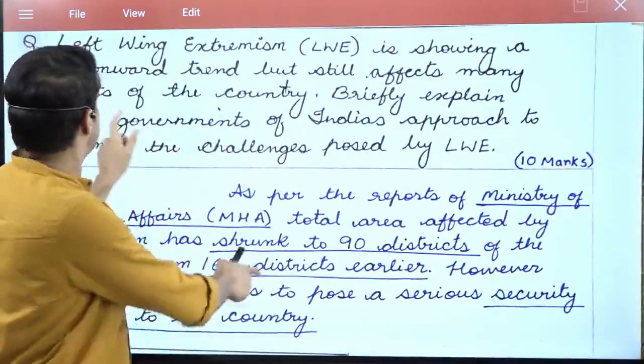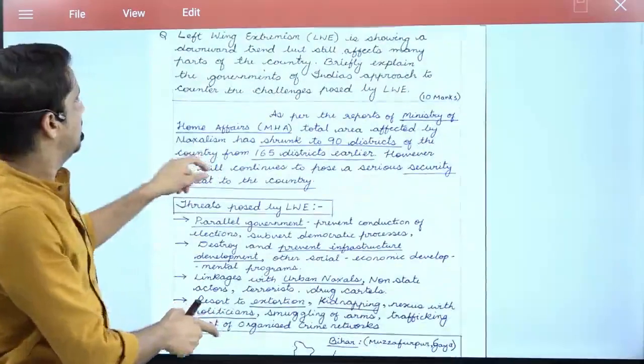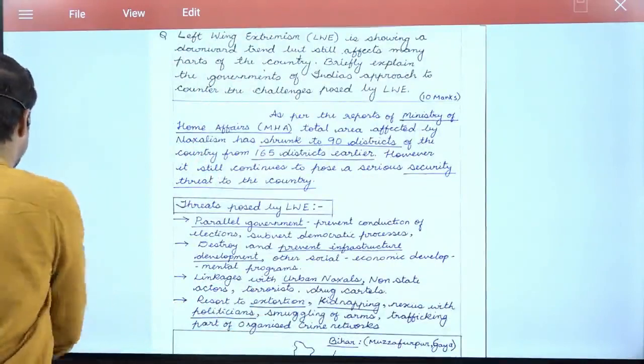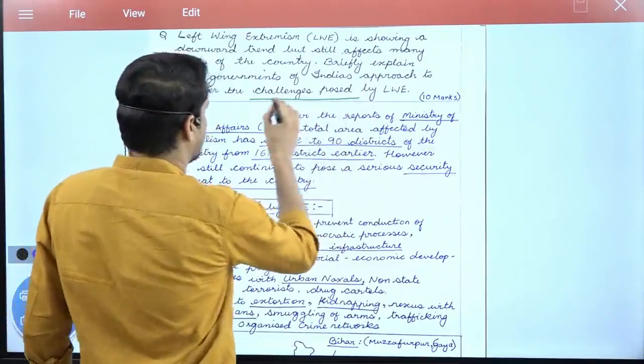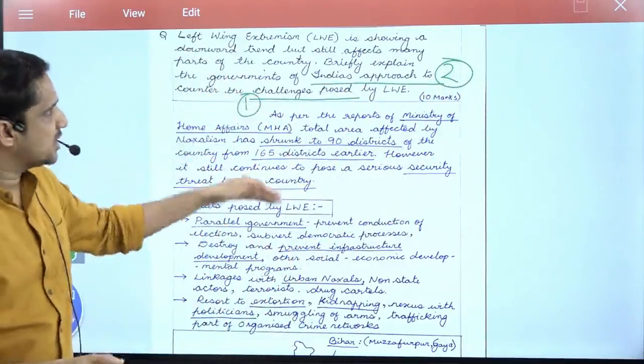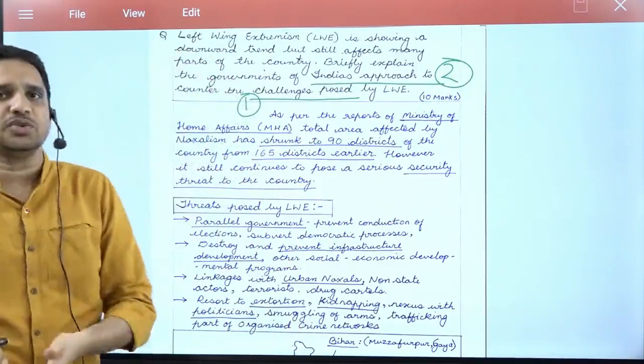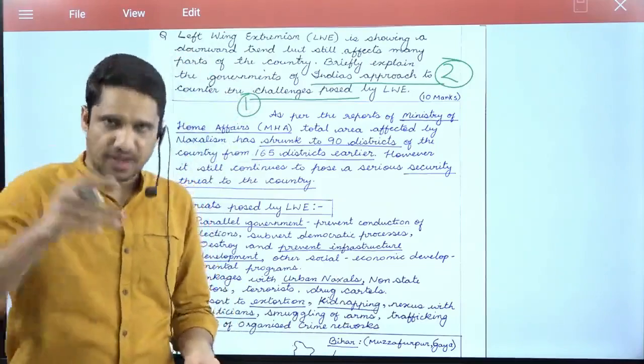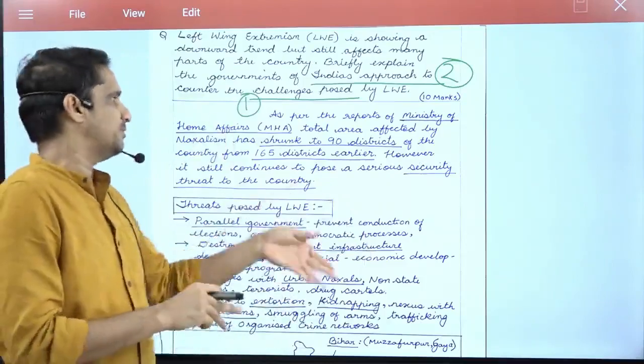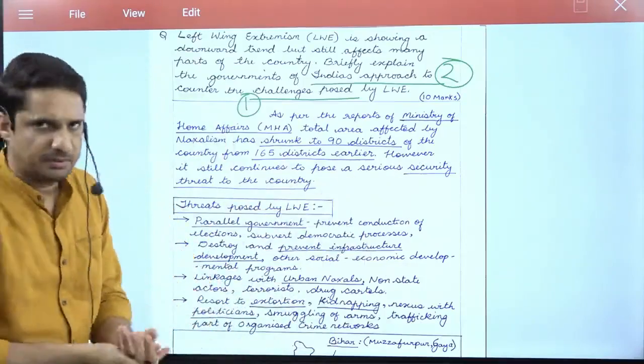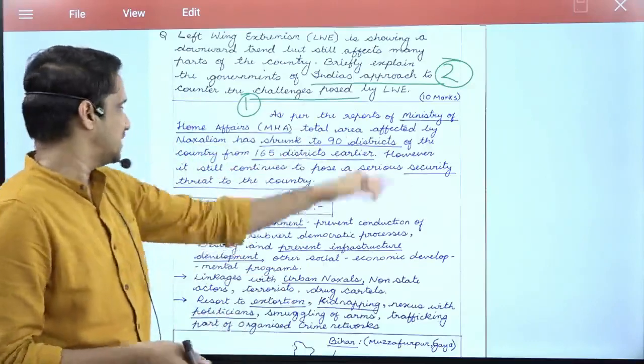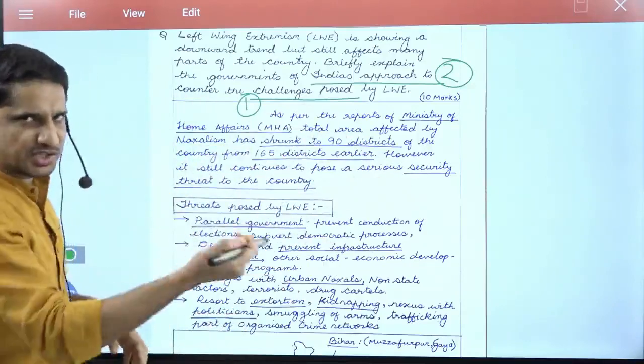Let's discuss the topper's answer for this question. Since the question mentions a downward trend, the introduction should be aligned to show how it has decreased. A very good introduction is: earlier 165 districts were affected by LWE, and now according to MHA, 90 districts are affected. This is a good factual introduction. However, it still continues to pose a serious security threat to the country.